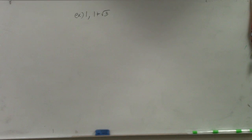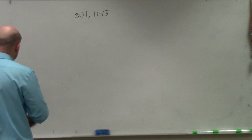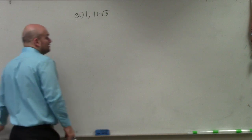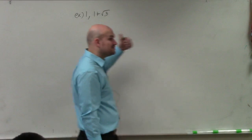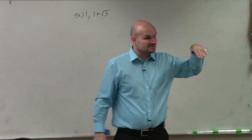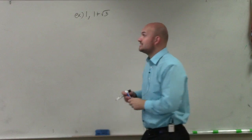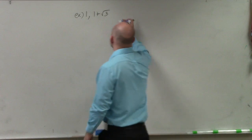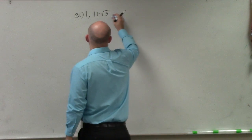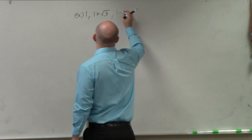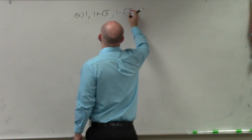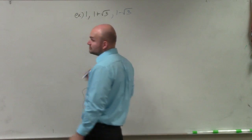You guys can do it. The first thing I want you to remember is, any time you see a square root and you're talking about the zeros, you have to make sure you include its conjugate. So therefore, we have 1 minus the square root of 3 is also a zero.